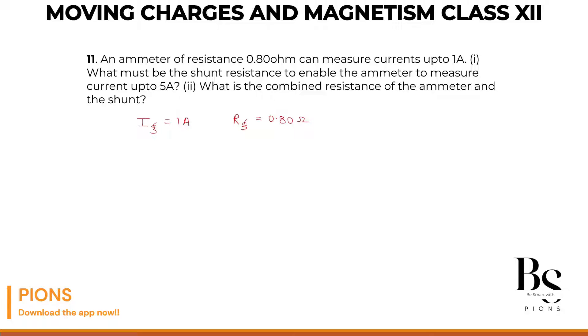So total current in the circuit is 5 ampere, and we will do the second part after finding the resistance of the shunt. Now pay attention here. If this is our galvanometer here, the galvanometer has its own resistance, let's call it RG.